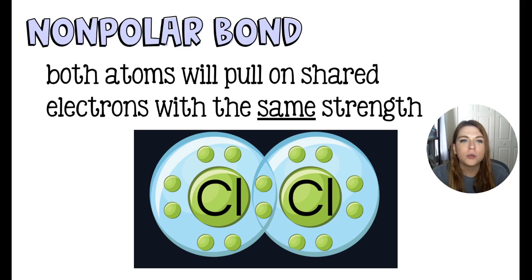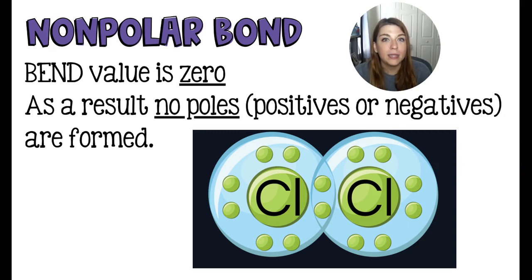Again, both of these atoms are going to pull on the shared electrons with the exact same strength. Our bend value or bond electronegativity difference value is zero, and this has no poles. There is no difference in the strength. And because this is a nonpolar bond, it indicates that there's no poles. There's no positive and no negative region on this bond.